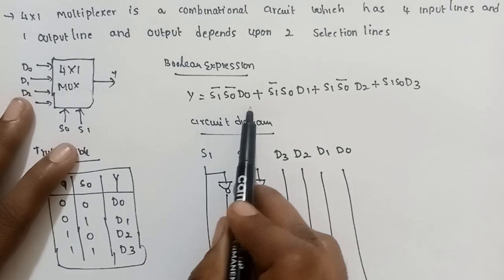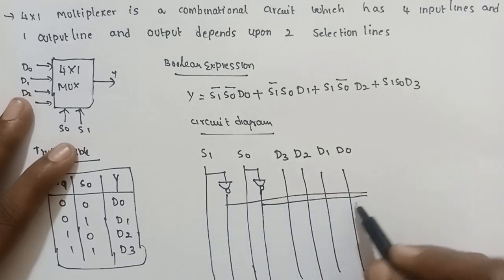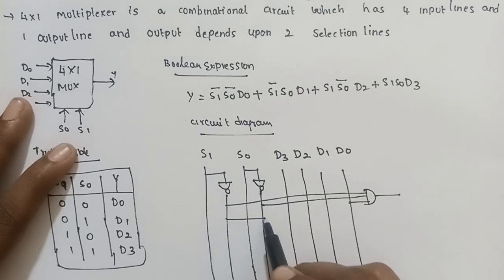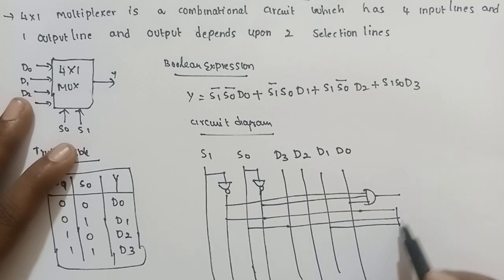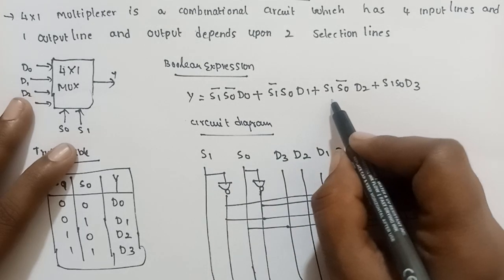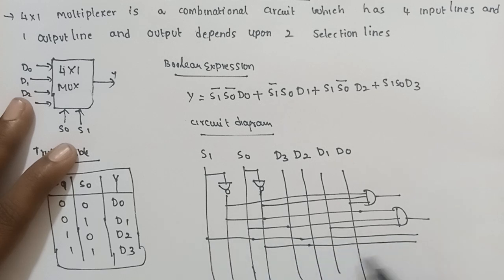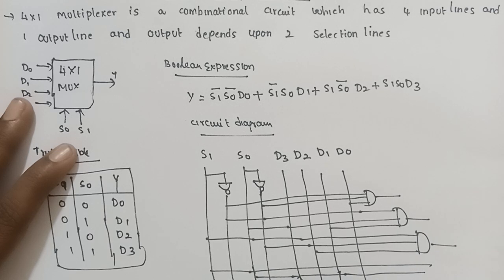The AND gates are connected as follows: S1-bar, S0-bar, D0 into the first AND gate. S1-bar, S0, D1 into the second AND gate. S1, S0-bar, D2 into the third AND gate. S1, S0, D3 into the fourth AND gate. All four AND gate outputs are connected to an OR gate to produce the final output.